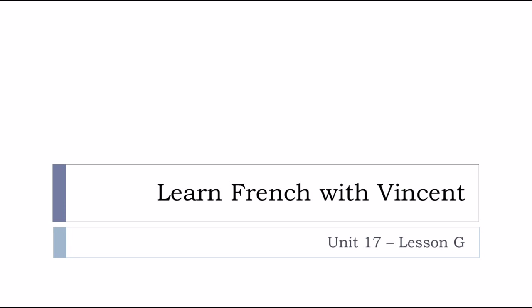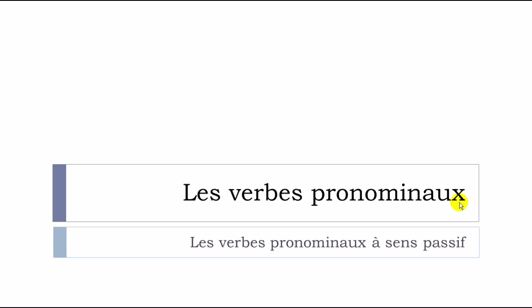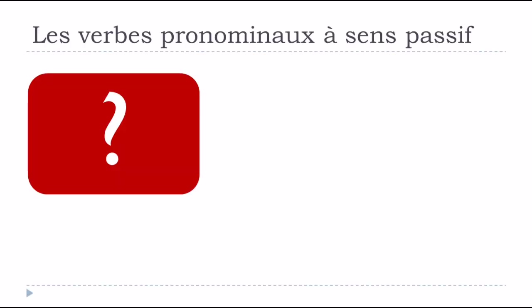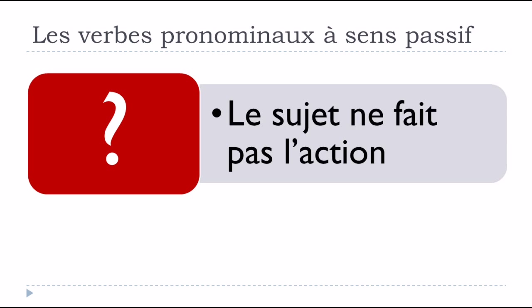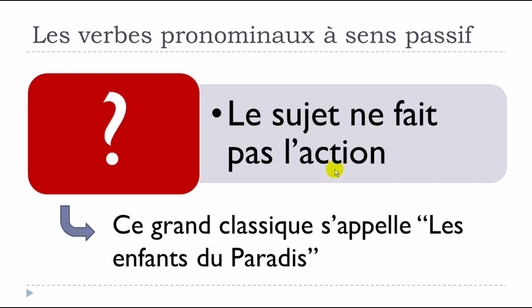Bonjour à tous and welcome to Learn French with Vincent. This is Unité 17, Leçon J. In this lesson we'll see les verbes pronominaux à sens passif. The main concept is that when we talk about le passif in French, le sujet ne fait pas l'action - the subject does not do the action.